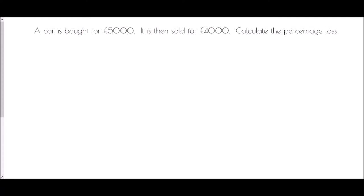Next we're told that a car is bought for £5,000. It is then sold for £4,000. We want to calculate the percentage loss. Well again just in the same way I want to see first what is the loss that actually happens. So £5,000 down to £4,000 that is a loss of £1,000. But in order to work out the percentage loss I need to compare it to the original price and the original price is the £5,000. And so as a fraction I have 1,000 over 5,000.